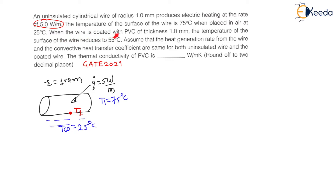When the wire is coated with PVC of thickness 1 mm, the temperature of surface of wire reduces to 55 degrees Celsius. This is condition number 1: uncoated wire of radius 1 mm, surface temperature 75 degrees Celsius, uniform heat generation rate of 5 Watt per meter, and surrounding temperature 25 degrees Celsius.